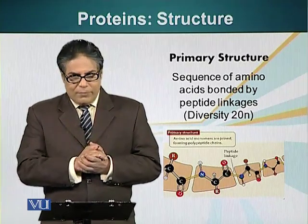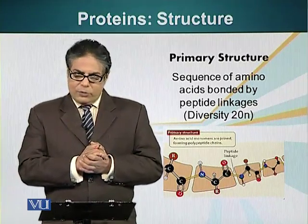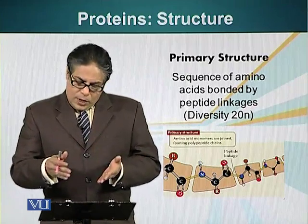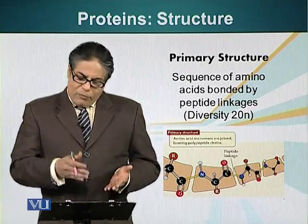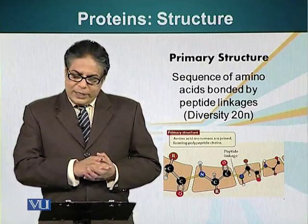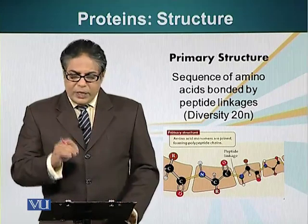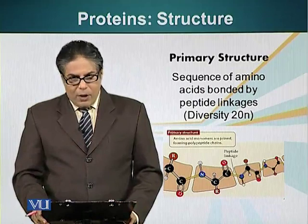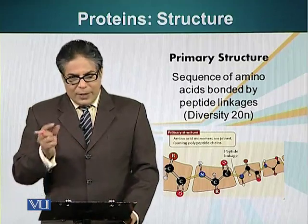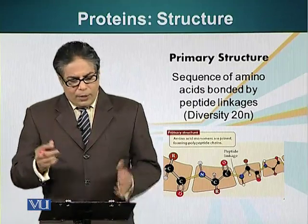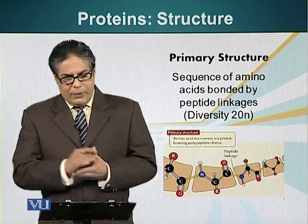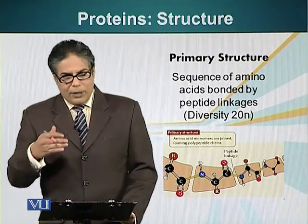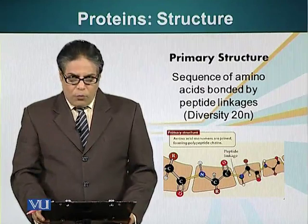As we have mentioned, there are 20 amino acids, so the formula for calculating diversity is 20 to the power of N, where N is the number of amino acids present in a protein. So if we are talking about just two amino acids, it will be 20 to the power of 2, which is 400.